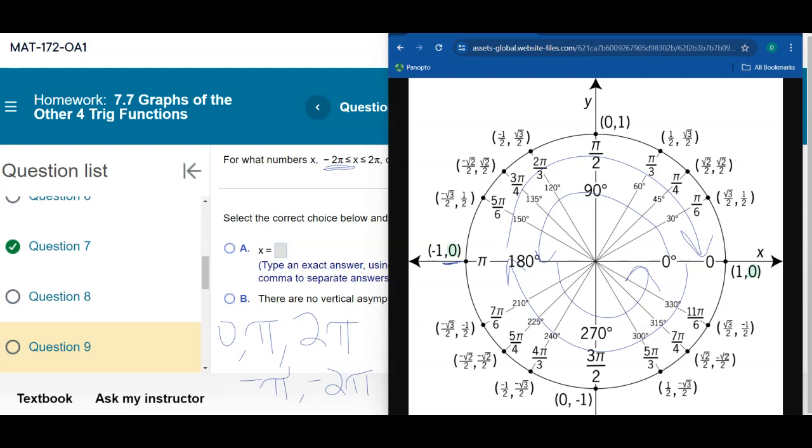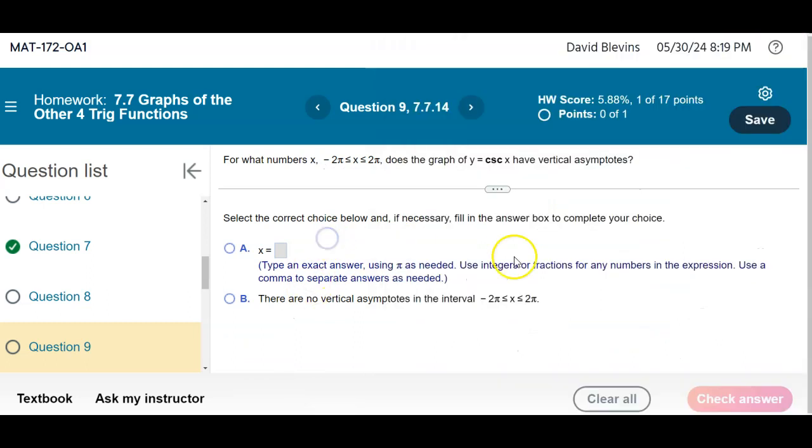Because those are the places where sine is zero, those are the places where cosecant will be undefined. And because it's undefined, we get vertical asymptotes.